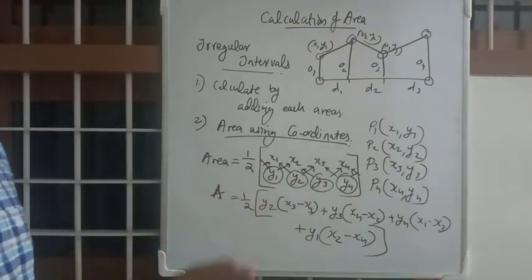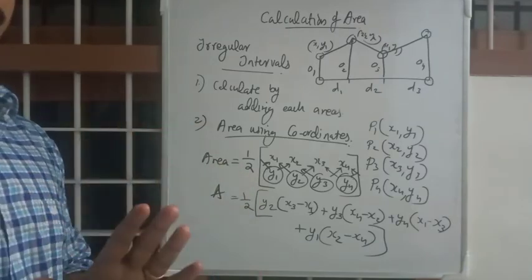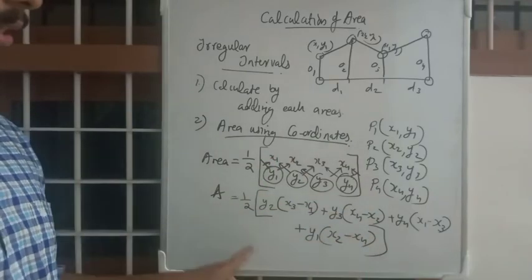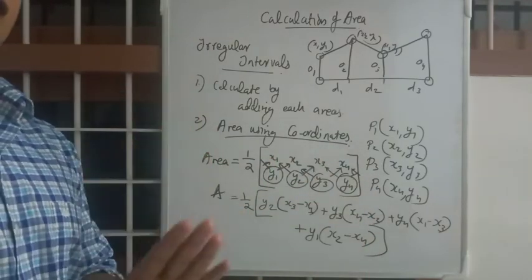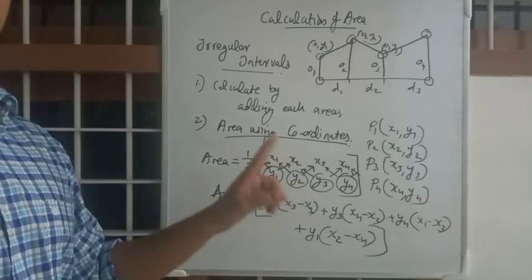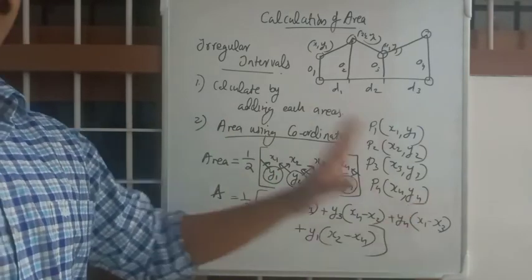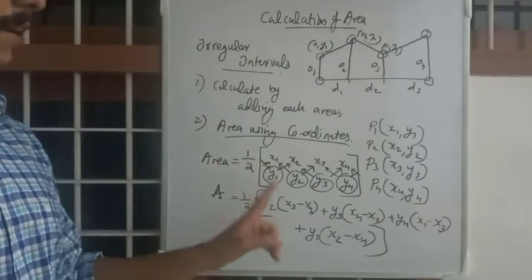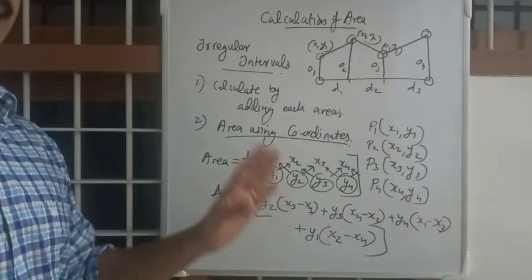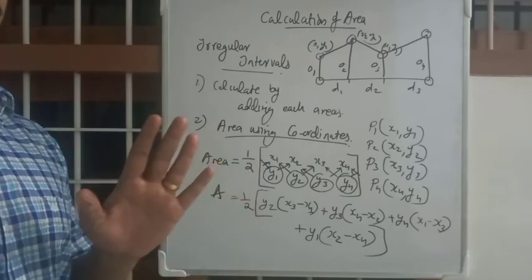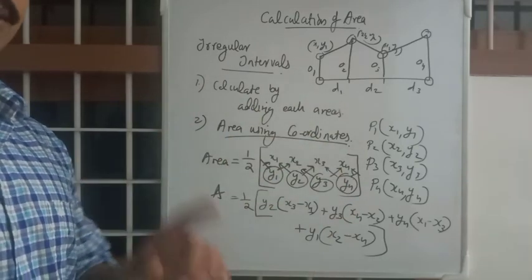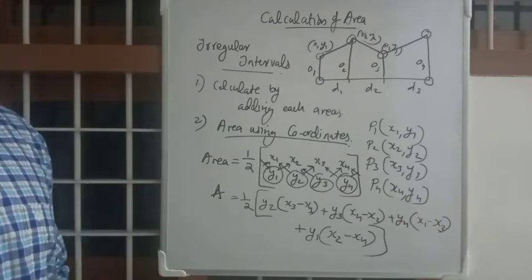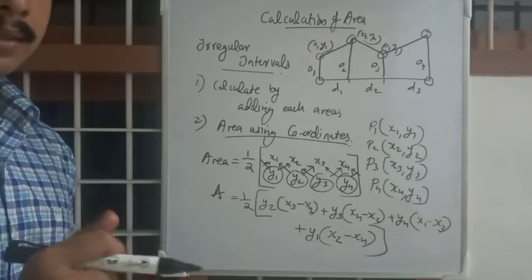This is how you calculate area using coordinates — hope you understood. Re-watch this video and do it by yourself using this equation. It can be seven values, eight values, nine values — the procedure is the same. Write this format in a notebook and memorize it, as it is a frequently asked question. There are two problems assigned for you to solve.